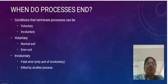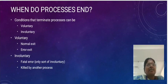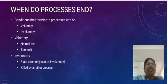When does a process end? The conditions that terminate a process can be voluntary or involuntary. Voluntary termination includes normal exit and error exit. Involuntary termination includes a fatal error, or being killed by another process.